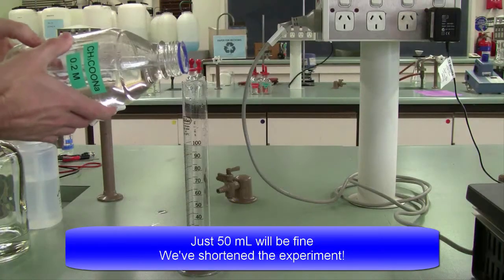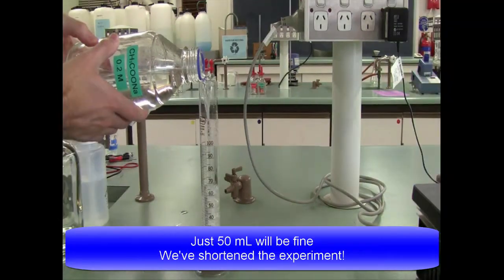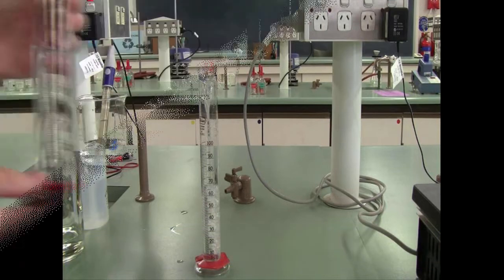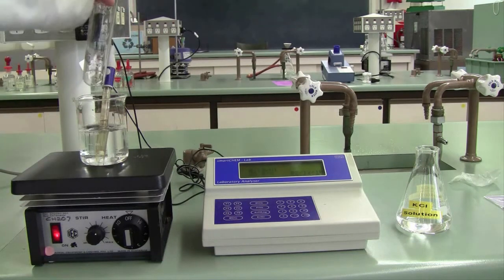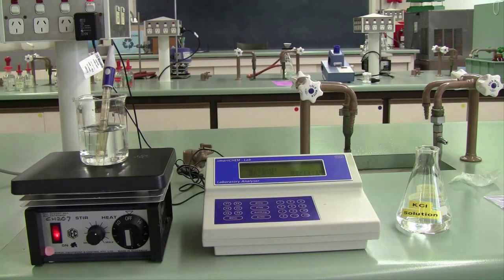Then take 75 ml of 0.2 molar sodium acetate, a weak base, the conjugate weak base of your acetic acid. Add that to your acetic acid, you now have a mixture of a weak acid and its conjugate base, a buffer solution.